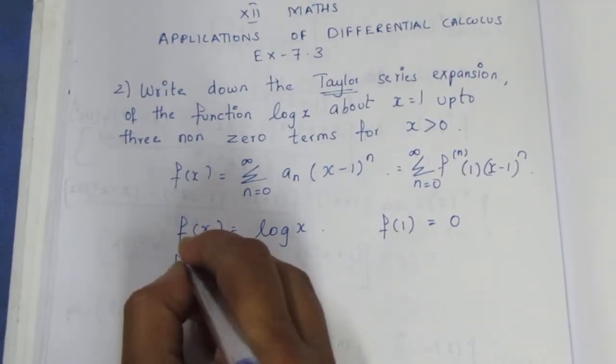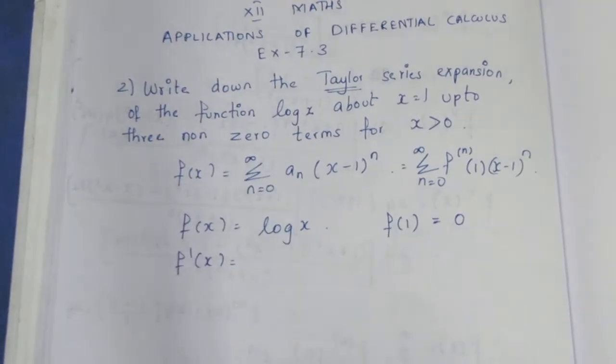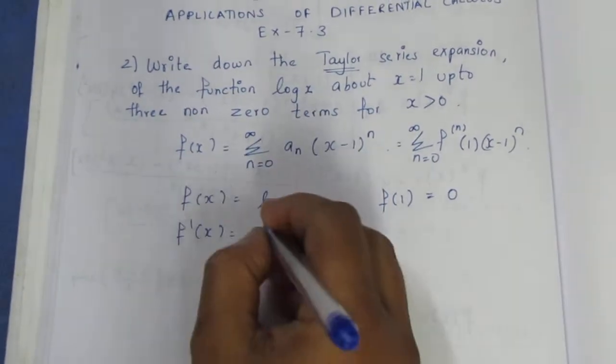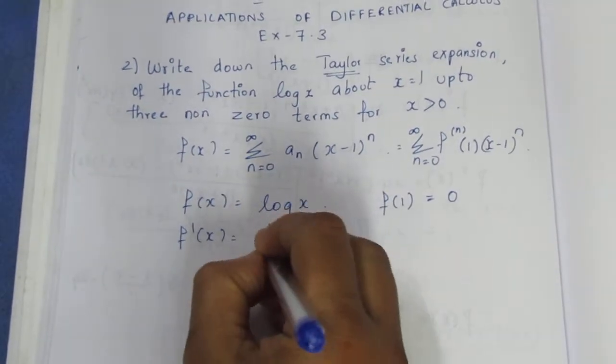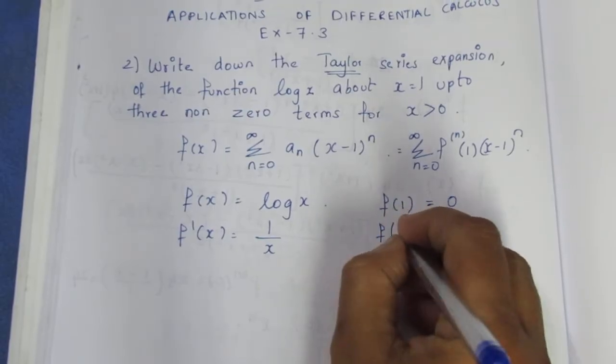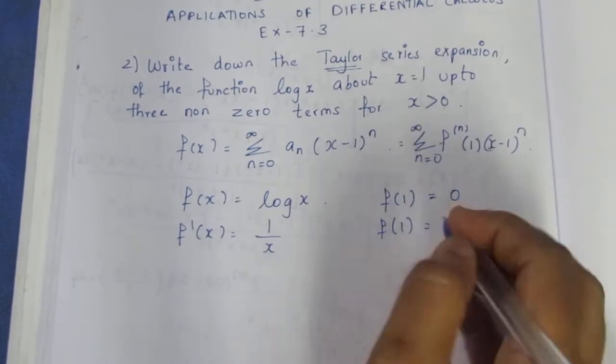Next, f dash of x. The derivative of log x is equal to 1 by x. So f dash of 1 is equal to 1 by 1, which equals 1.